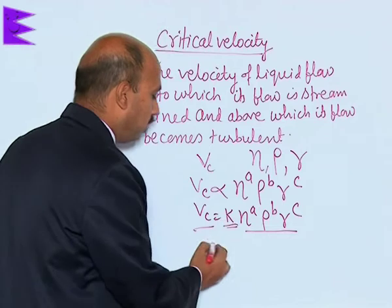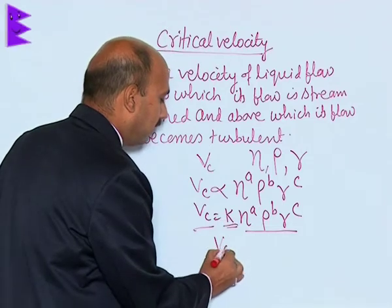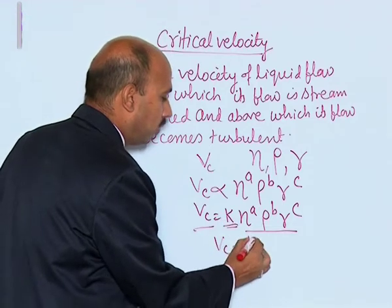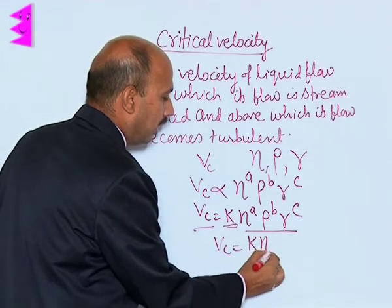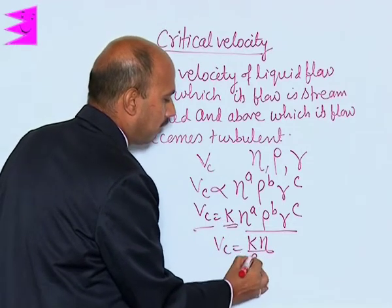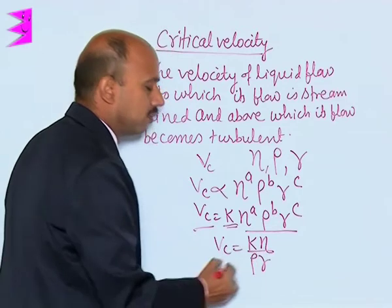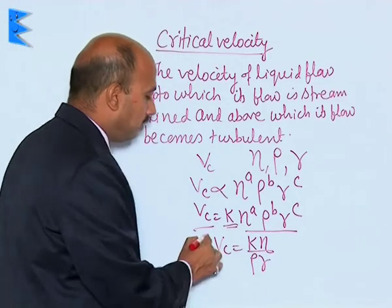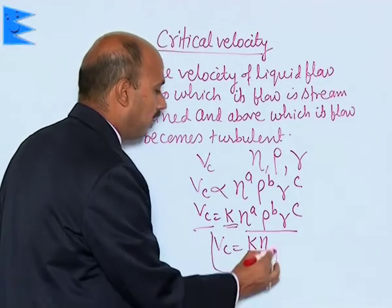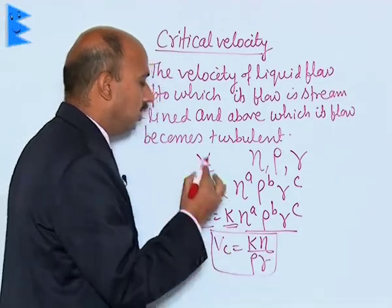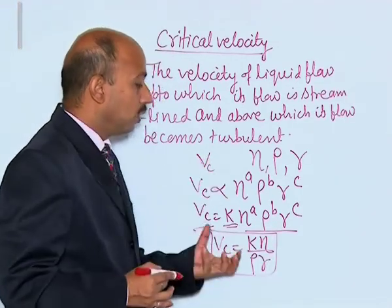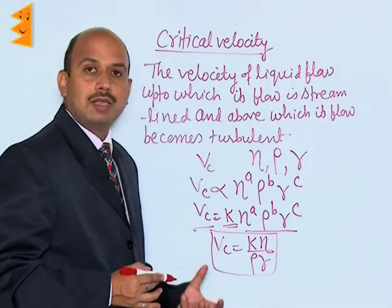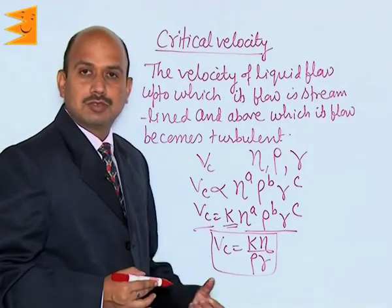When you derive this formula you will get Vc is equal to k times eta divided by rho times r. This is the formula for critical velocity, which can be obtained using dimensional analysis.